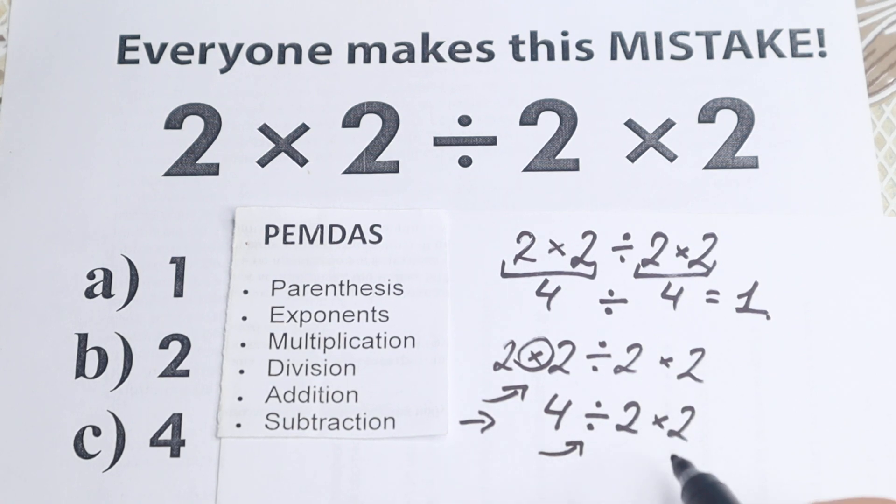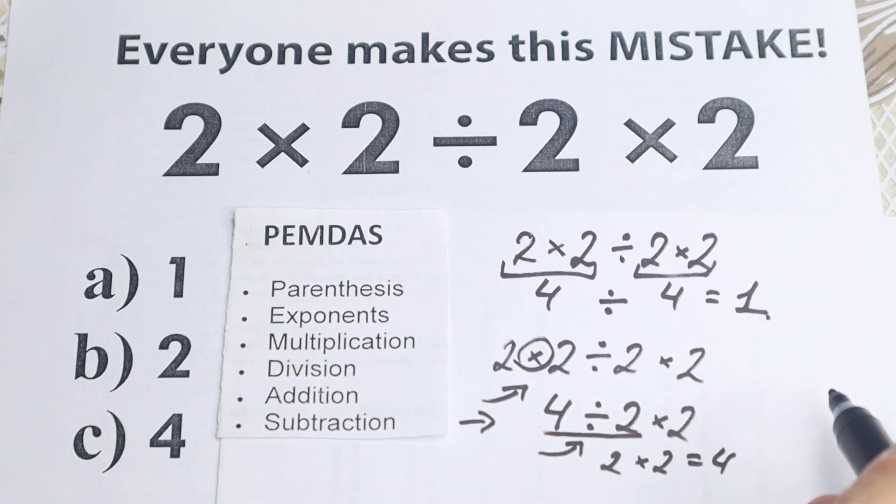So we need to divide. Because multiplication and division have the same priority if we're talking about order of operations. So 4 divided by 2 equal to 2. And 2 times 2 in the end equal to 4. As you can see, according to this order of operation PEMDAS, correct answer is option C.